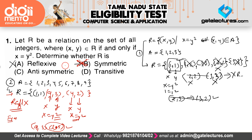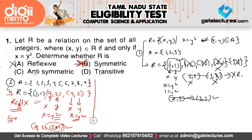So we've confirmed the relation is not reflexive and not symmetric. Now we need to determine whether it is anti-symmetric or transitive. Let me take more examples to clarify this.